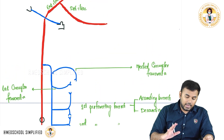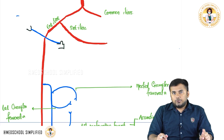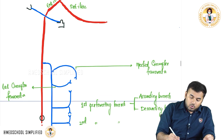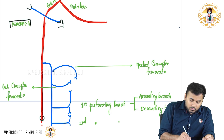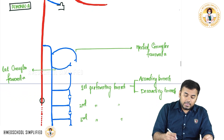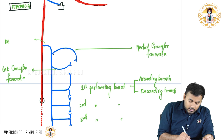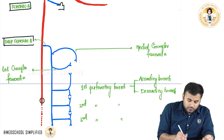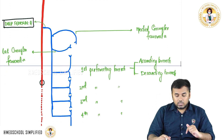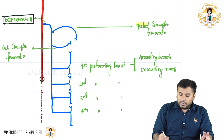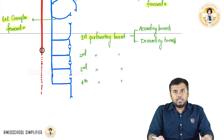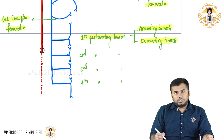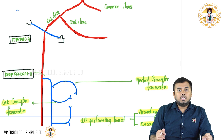To recap: the common iliac artery divides into external iliac and internal iliac. The external iliac continues as the femoral artery, which gives off the deep femoral artery. The deep femoral artery gives two branches — medial circumflex and lateral circumflex femoral arteries — followed by four perforating branches, each with ascending and descending divisions.